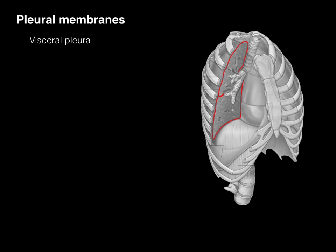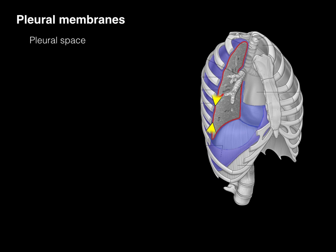The visceral pleura, shown in red, is intimately associated with the outside parenchyma of the lung — it is part of the lung itself. The pleural space is the space between the parietal pleura and visceral pleura. The root of the lung is where the visceral and parietal pleura come together, where the bronchial tree and pulmonary vessels enter and exit the lung.